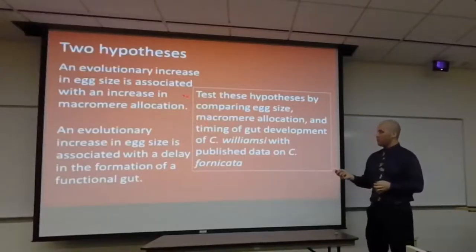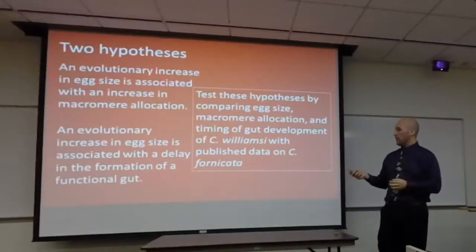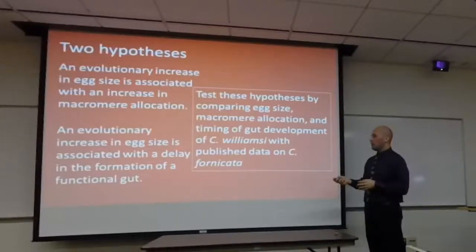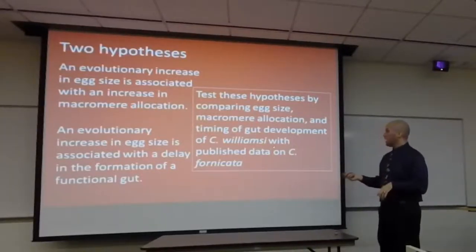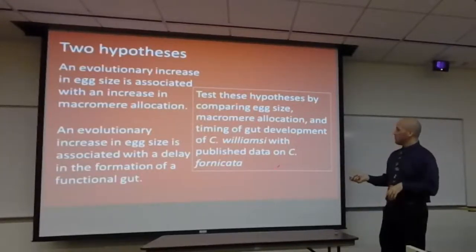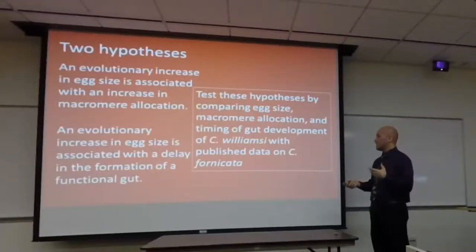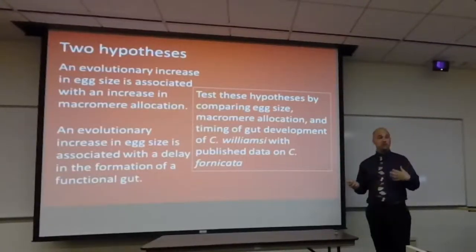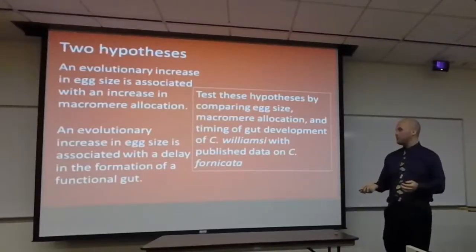I have two hypotheses: macromere allocation with egg size, and egg size with delay in gut formation. I will test both by comparing egg size, macromere allocation, and gut development of Crepidula williamsae and Crepidula fornicata. However, a single comparison gives detail but unclear broader applicability, so a phylogenetic comparative analysis can test hypotheses about common developmental changes across multiple evolutionary transitions.